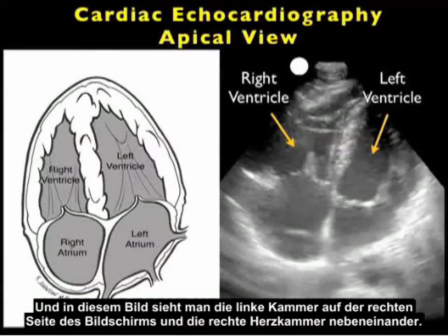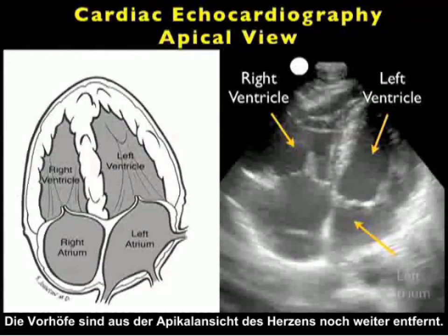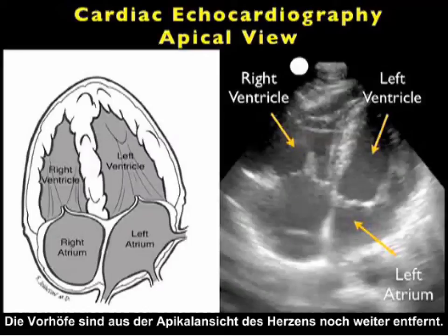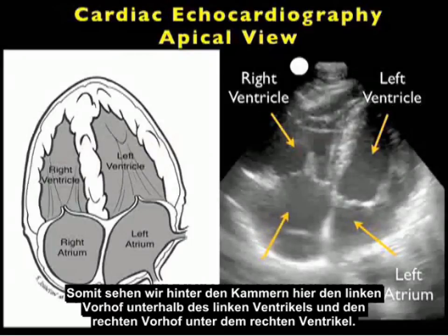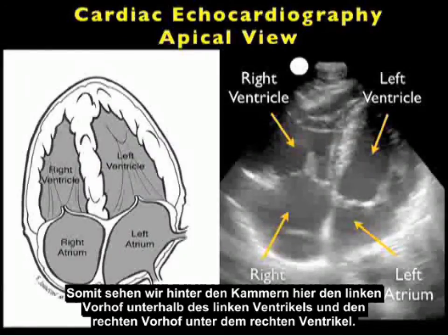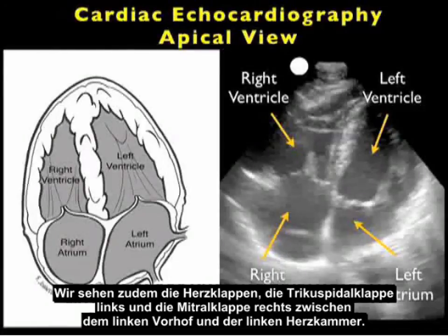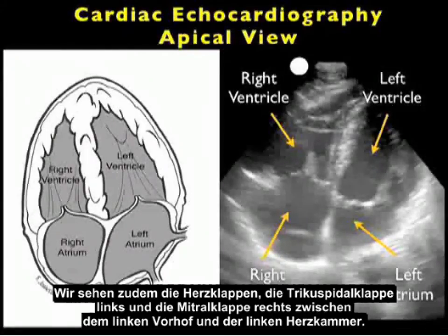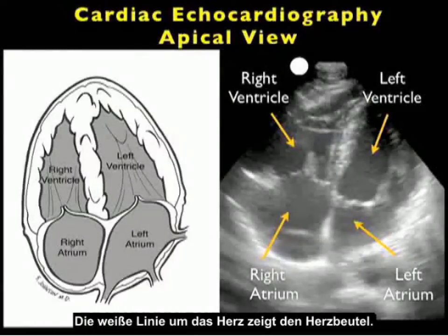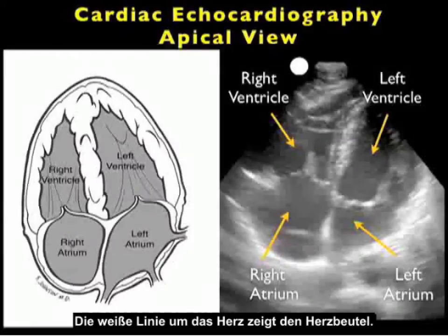In this image, we see the left ventricle to the right of the screen and the right ventricle adjacent. The atria from the apical view of the heart will be further away, thus posterior to the ventricles. We see here the left atrium just below the left ventricle and the right atrium below the right ventricle. We also see the valves — the tricuspid valve to the left and the mitral valve to the right, in between the left atrium and the left ventricle. We can also appreciate the white lines surrounding the heart, which is the pericardium.